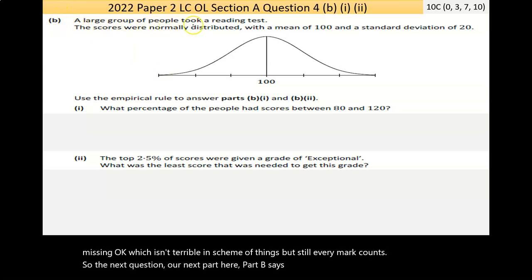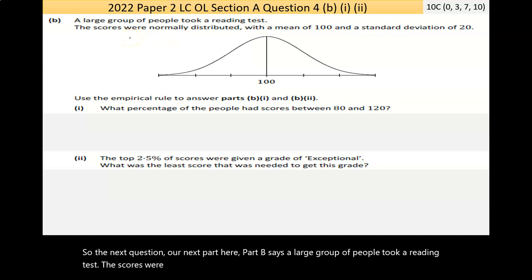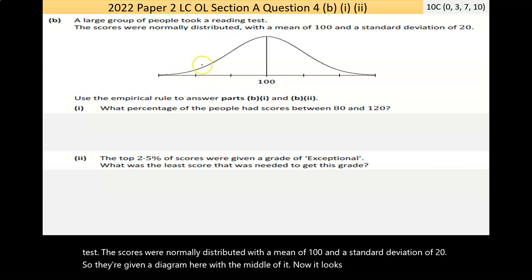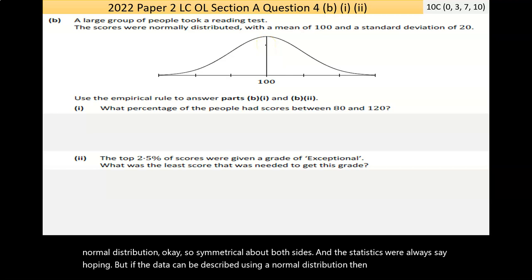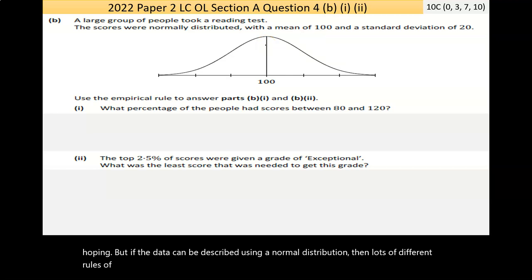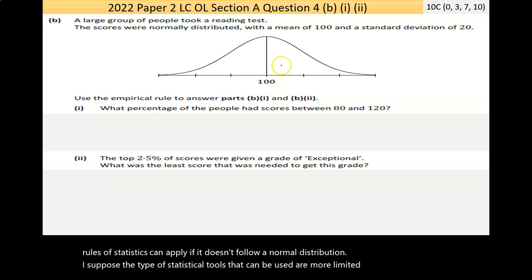Part B says a large group of people took a reading test. The scores were normally distributed with a mean of 100 and a standard deviation of 20. They give a diagram here with the middle of it. They do say this is a normal distribution, so it's symmetrical about both sides. If the data can be described using a normal distribution, then lots of different rules of statistics can apply.